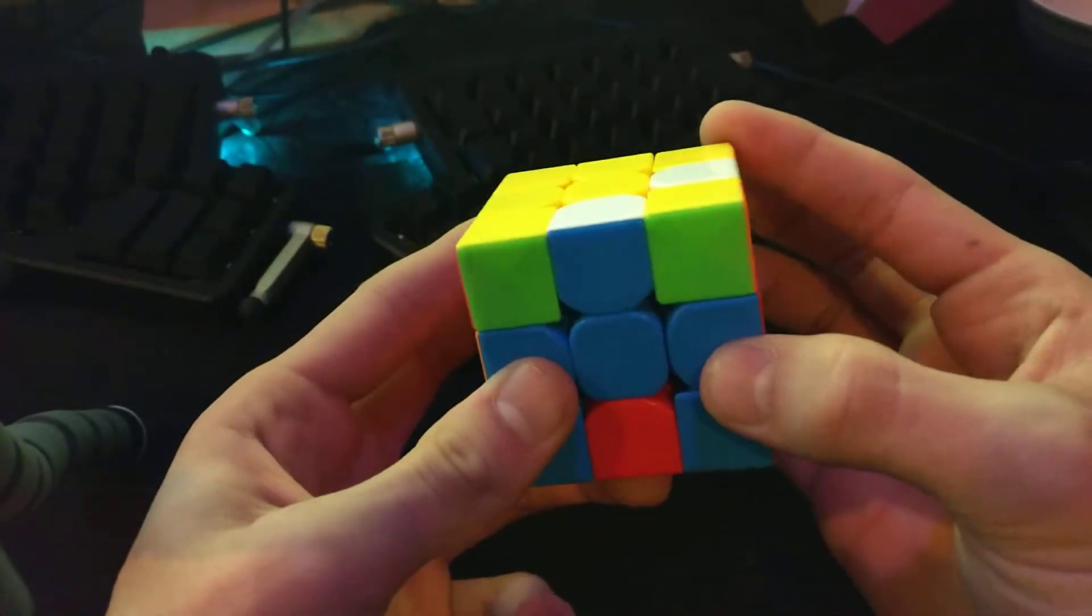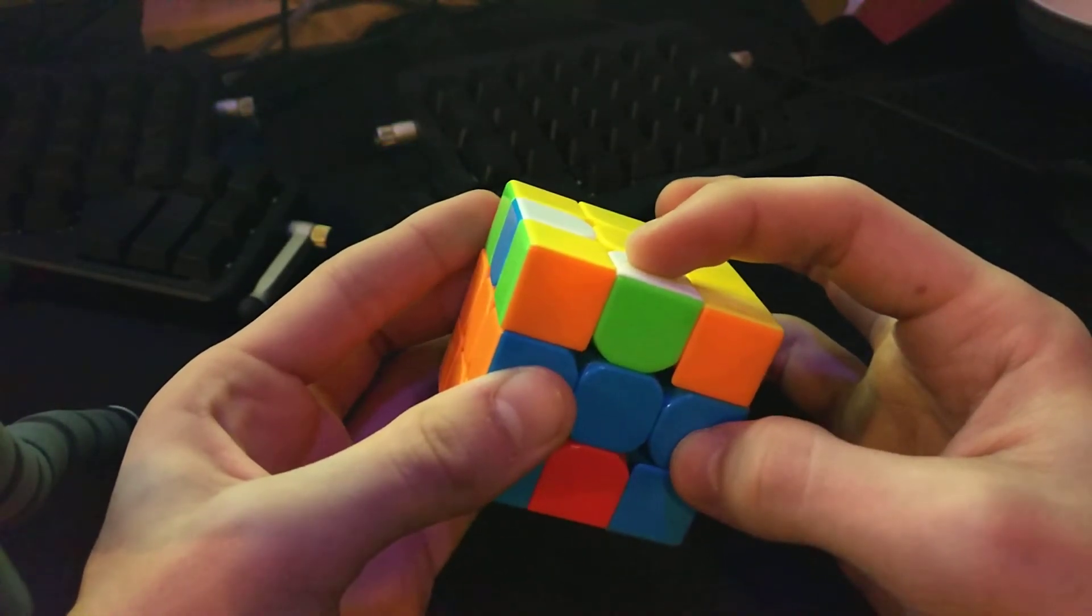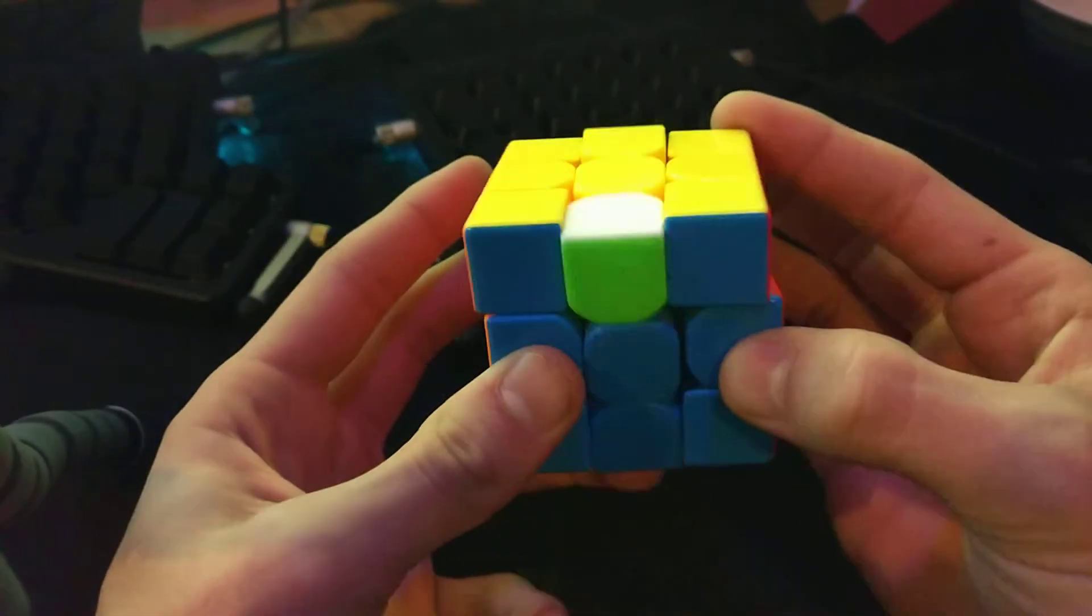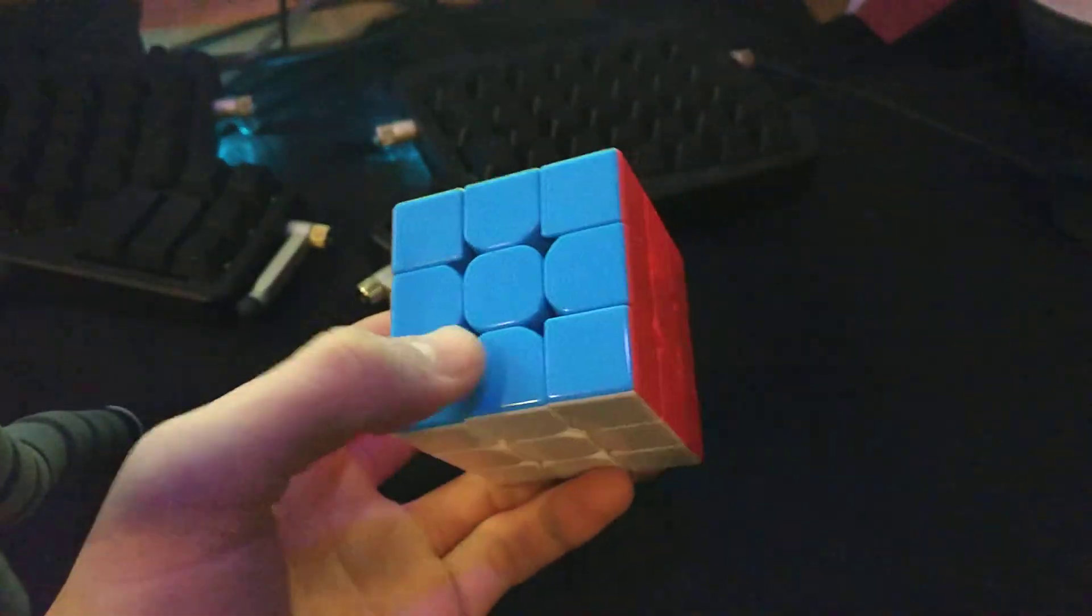So here to track this you move this back here. Something like that. Alright, so that's my Roux example solve. Well, thanks for watching.